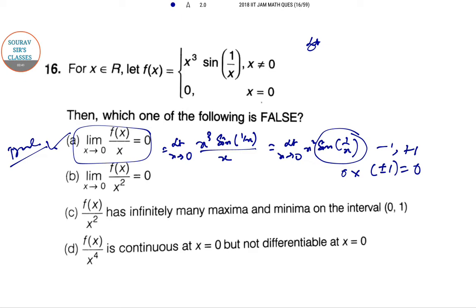Next, option B: f(x)/x². So x³/x² = x³ · sin(1/x)/x² gives limit x → 0 of x·sin(1/x). This is also 0 times oscillatory function ±1, so this is 0 itself. So this is also true.